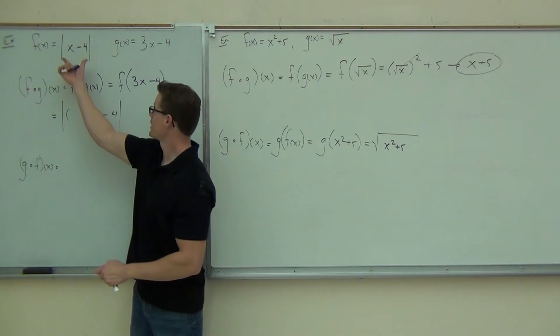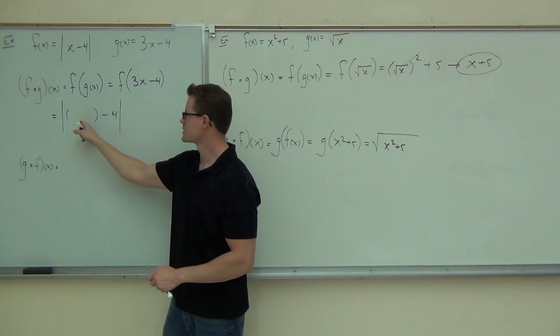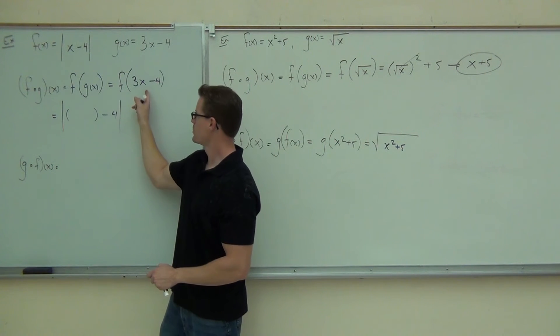It says f. Go back to f. Read it in your head. Absolute value of parentheses minus 4. That's what we have. What goes inside there? Whatever you put there.